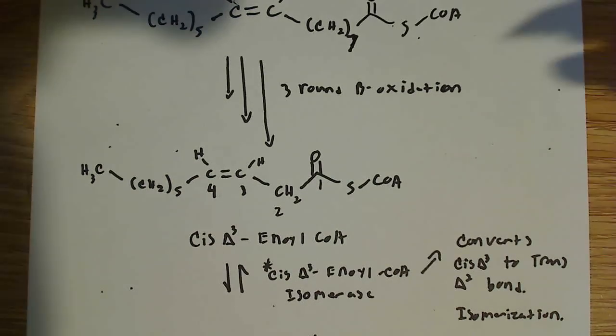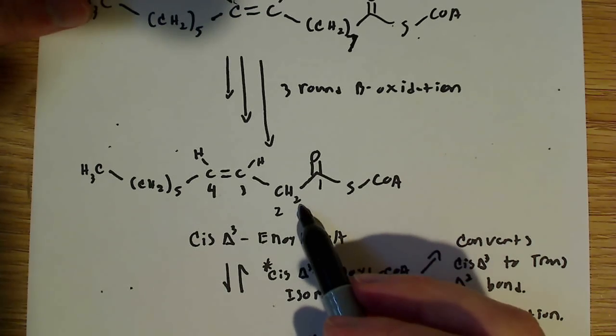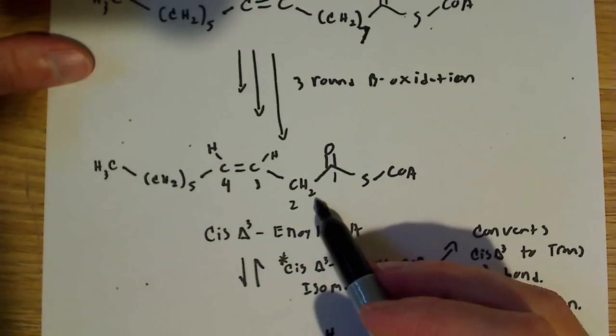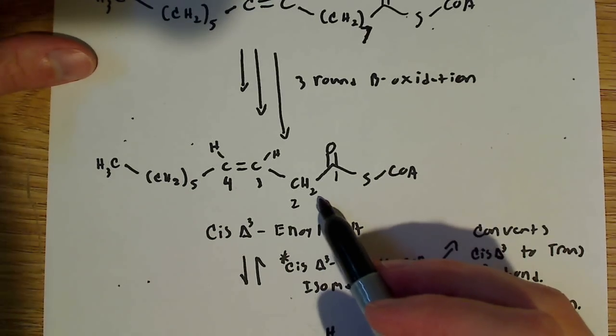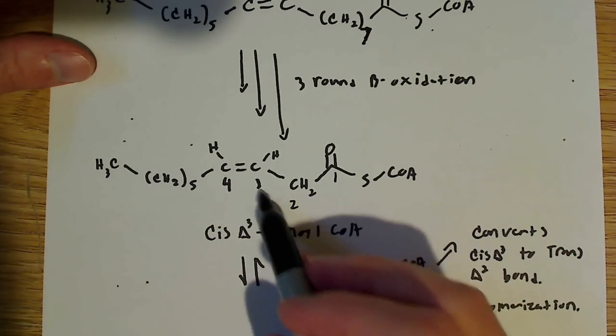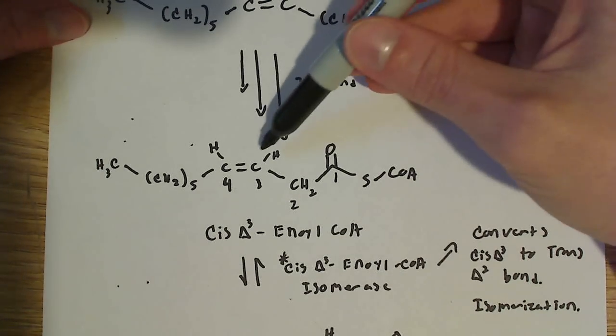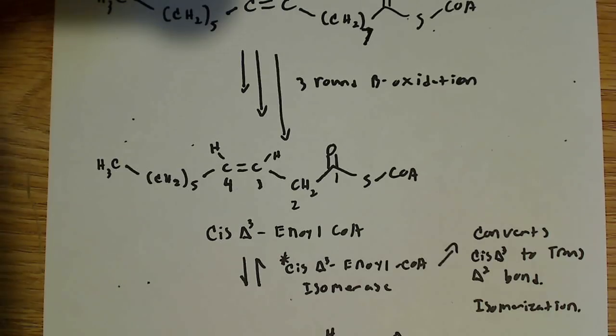We end up with cis delta-3 enol-CoA. So now look, we lost the six carbons here. See, we had seven here. We lost six of those. We have one left, and then we have, so this is carbon two, three, and four. So between this three, four here, we have this cis double bond.